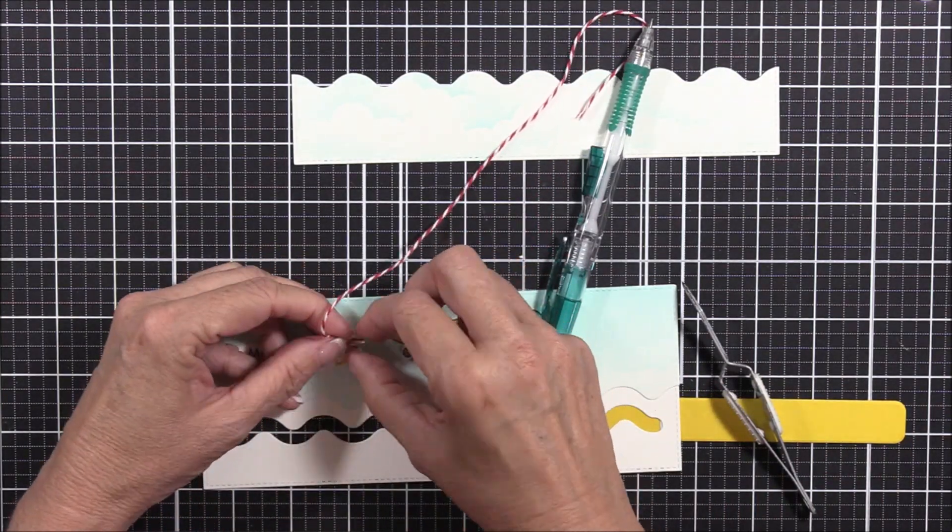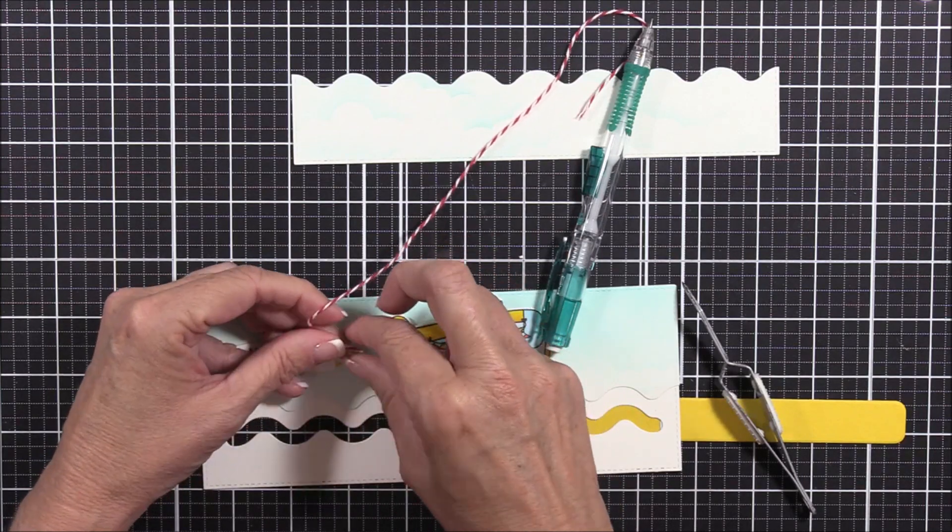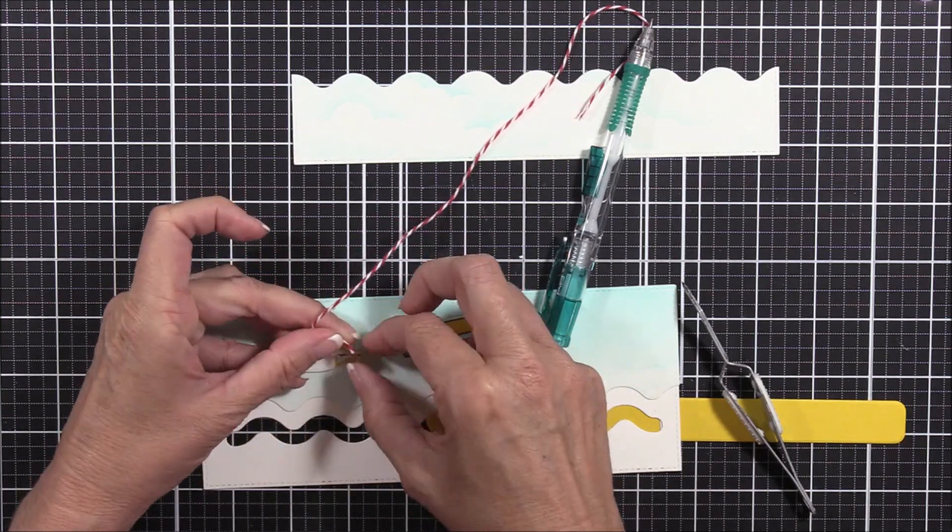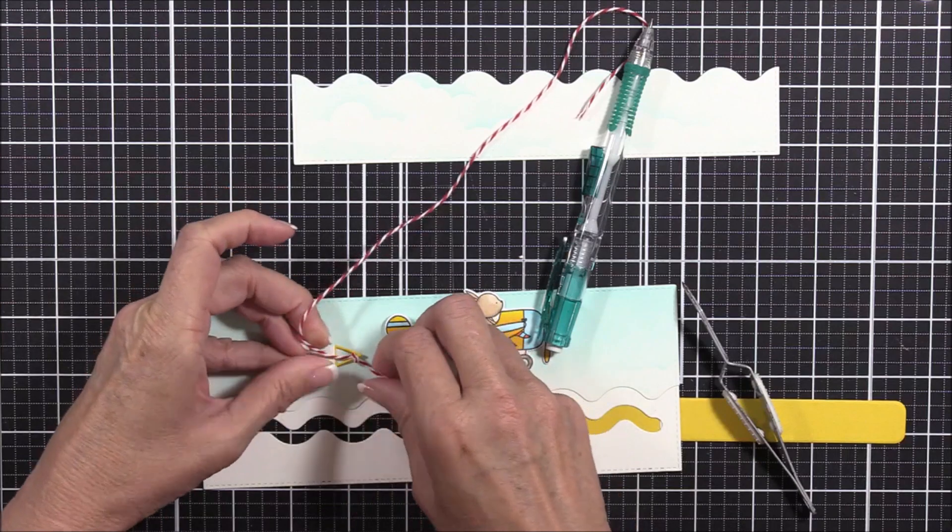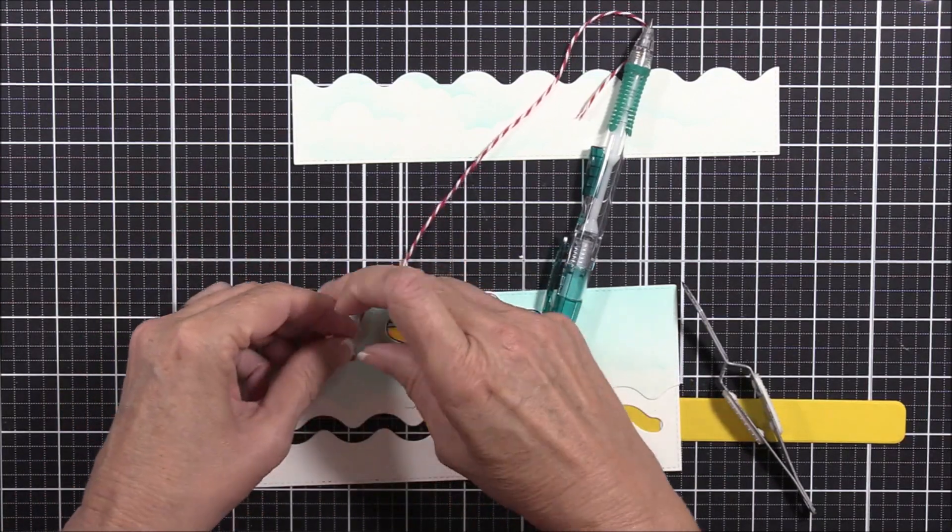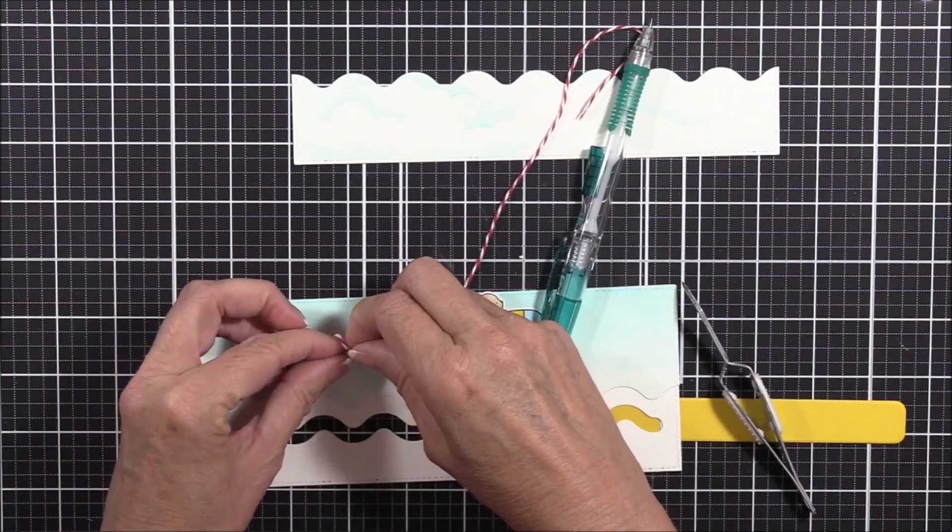I'm securing one end of some red and white Baker's twine to the tab, as I wanted to have the banner be attached to the airplane when I pull on the tab. The airplane moves, but the banner doesn't, so I thought this was a good solution.